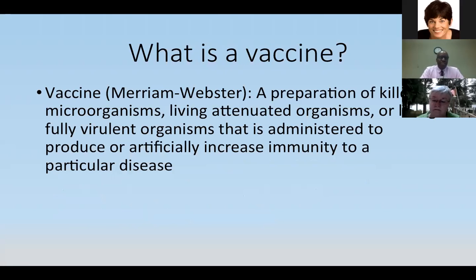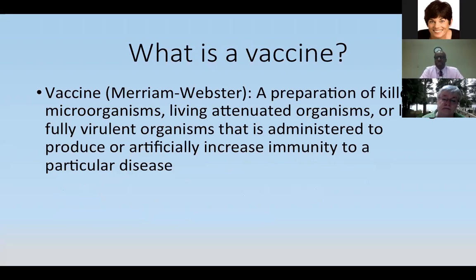What is a vaccine? The simplest approach is the Merriam-Webster definition: it is a preparation of killed microorganisms, living attenuated organisms, or living fully virulent organisms that is administered to produce or artificially increase immunity to a particular disease. In short, we expose a patient to either a live weakened organism — in most cases a virus — and the body develops an immune response to that virus, creating lifelong immunity. You can almost think of yourself as being infected by that organism, and that's how a vaccine generally works.